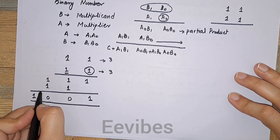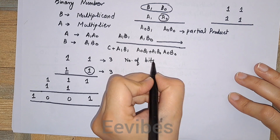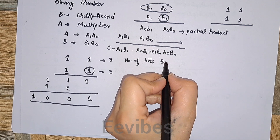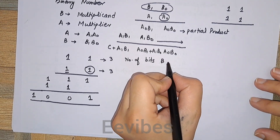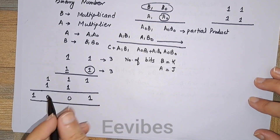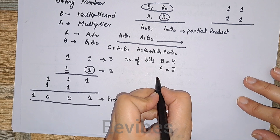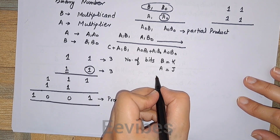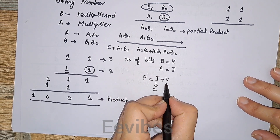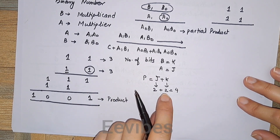From this we can conclude: if the number of bits of the multiplicand B equals k, and the number of bits of the multiplier A equals j, then the resultant product P will have k + j bits. So with j = 2 and k = 2, two plus two equals four bits in the result.